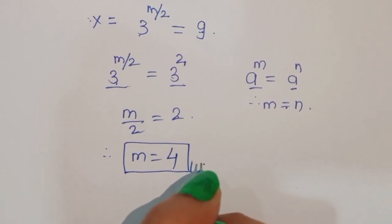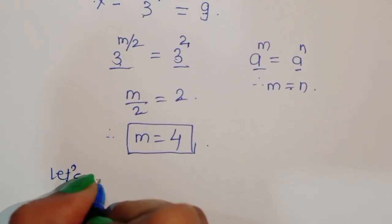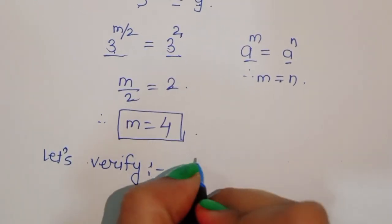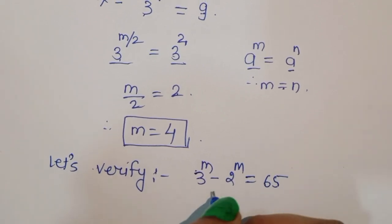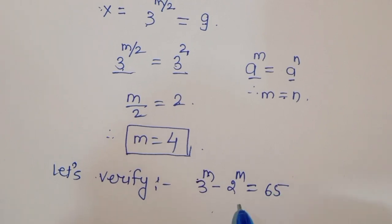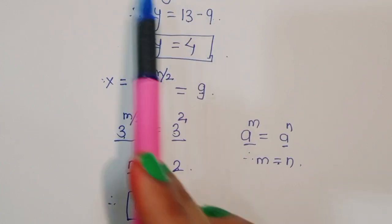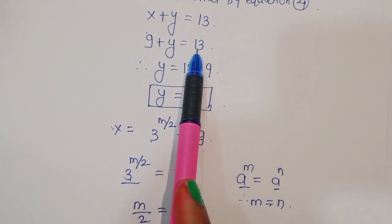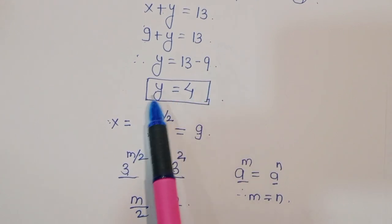Now let's verify this value. We verify: 3 power m minus 2 power m equals 65. We already found y equals 4. Also, x equals 3 power m/2 equals 9, so 3 power m/2 equals 3 squared, and with bases the same, m/2 equals 2, therefore m equals 4.